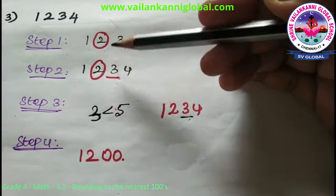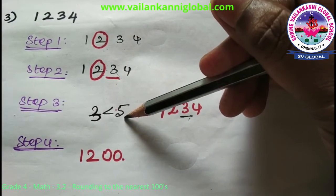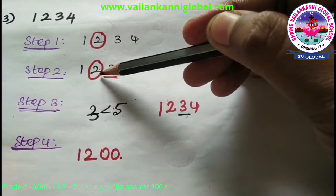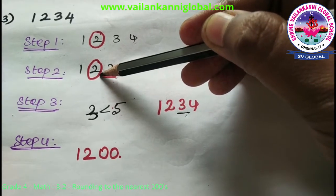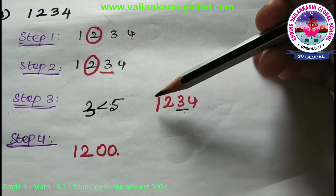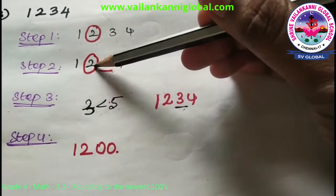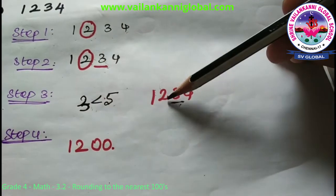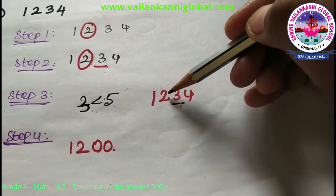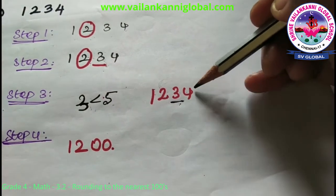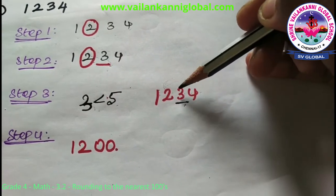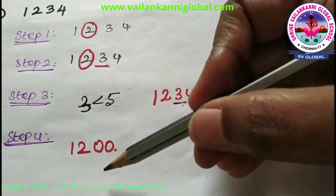Step 3 — check whether 3 is more than 5 or less than 5. This is less than 5, so just leave that number as it is, no need to change it. The thousands place 1 is constant, and we keep the hundreds digit 2 the same. Step 4 — change all digits to the right of the hundreds place to 0. So 3 and 4 both become 0, and the answer is 1200.